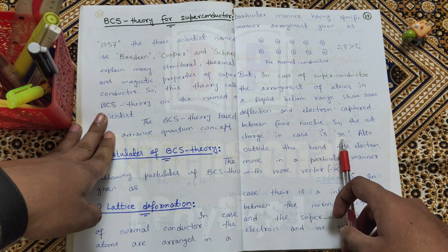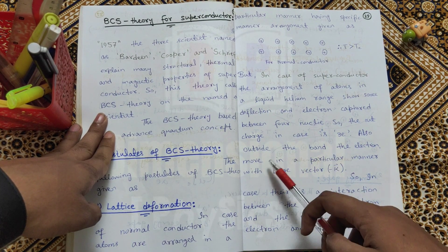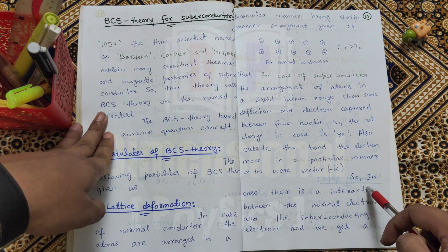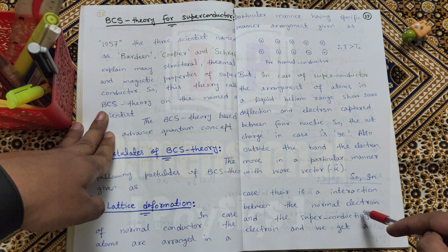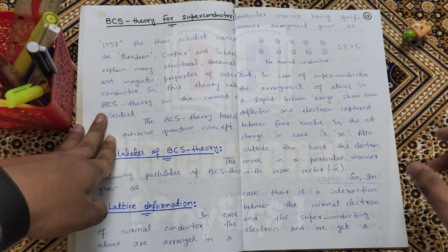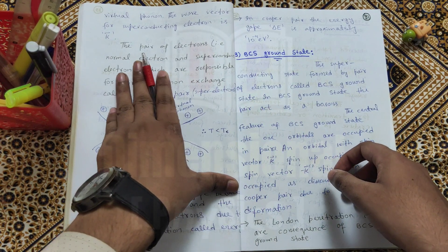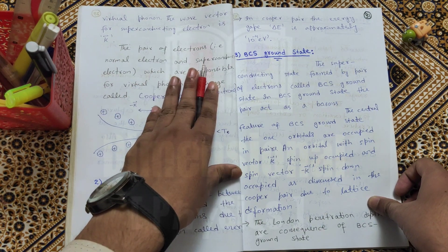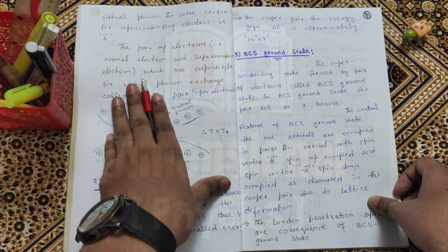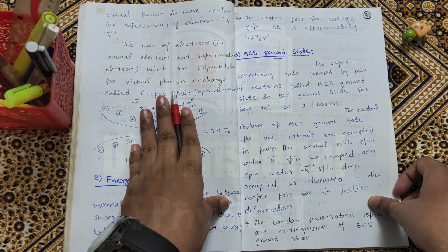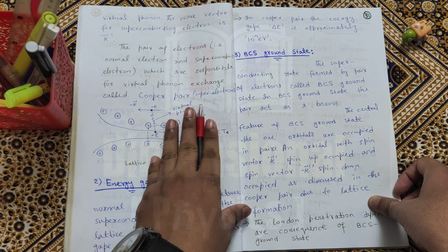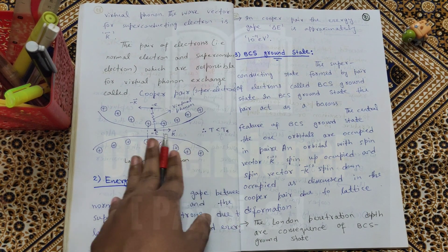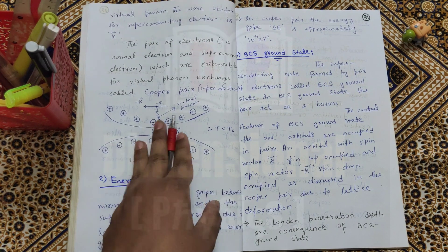An electron is captured between four nuclei, so the net charge in this case involves electrons outside the band. The electron moves in a particular manner with a wave vector minus k. There is an interaction between the normal electron and the superconducting electron, and we get a virtual phonon. The wave vector for the superconducting electron is k. The pair of electrons — normal electron and superconducting electron — responsible for virtual phonon exchange are called Cooper pairs and super electrons.